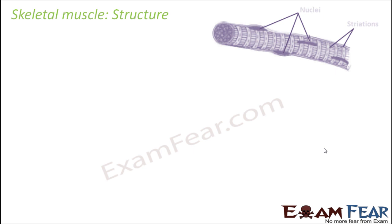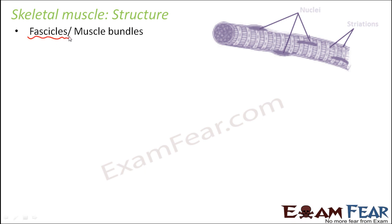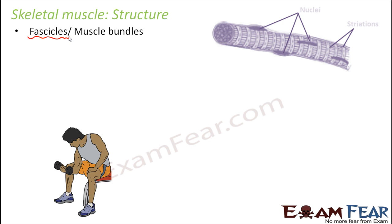Let us look at the structure of skeletal muscle. The various parts that together form the skeletal muscles include muscle bundles, which are also known as fascicles. Each muscle is made up of muscle bundles. Let us think of a scenario — suppose a person is doing exercise, moving his hand up and down while holding a dumbbell.